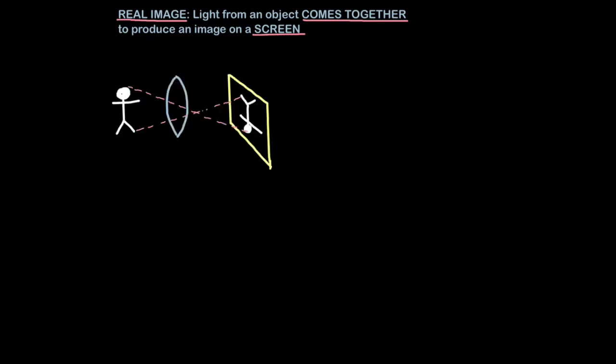So there are two types of images we can perceive: real images and virtual images. We get a real image when light from an object comes together, converges, to produce an image on a screen. So when you do lab experiments with lenses and you use a screen, what you're seeing on that screen is a real image.